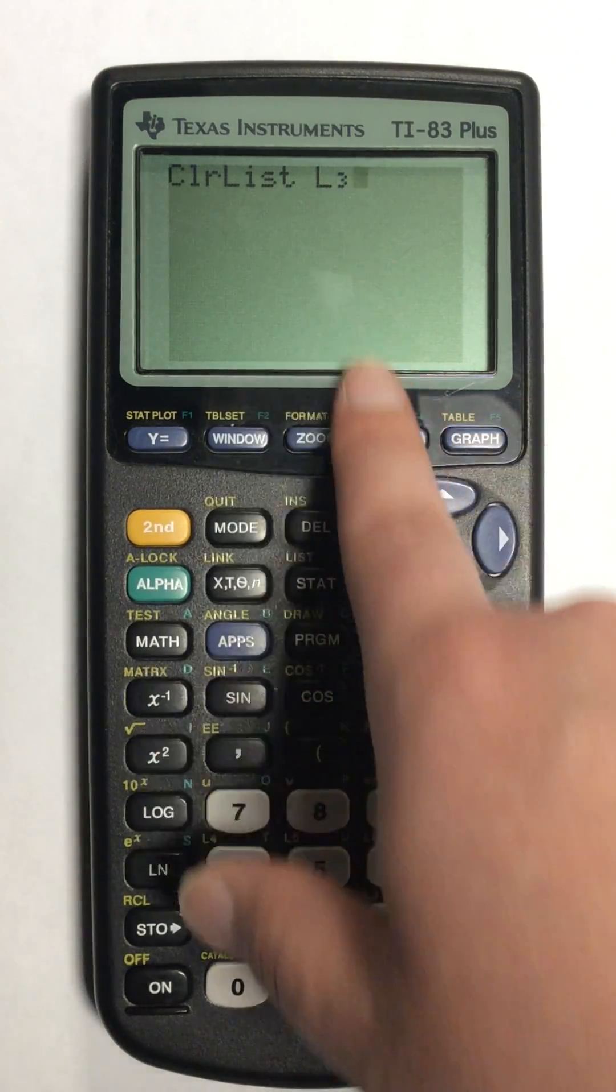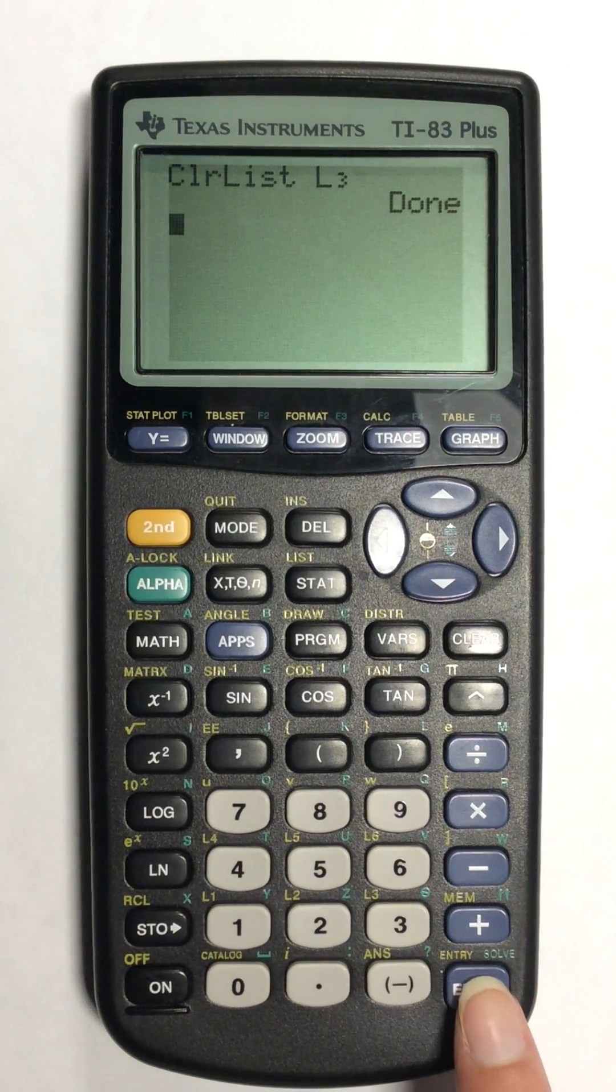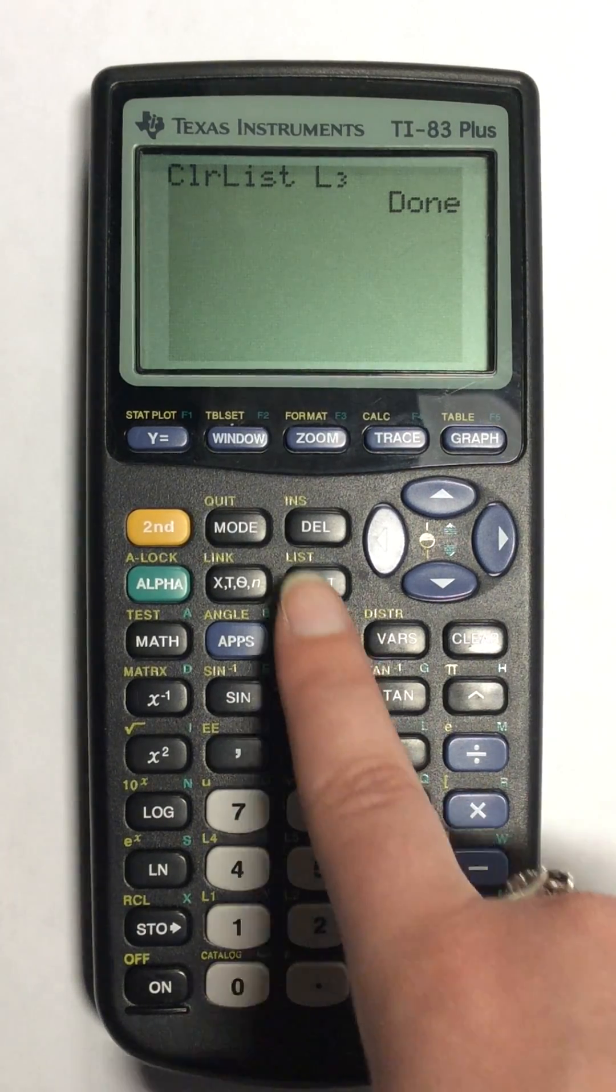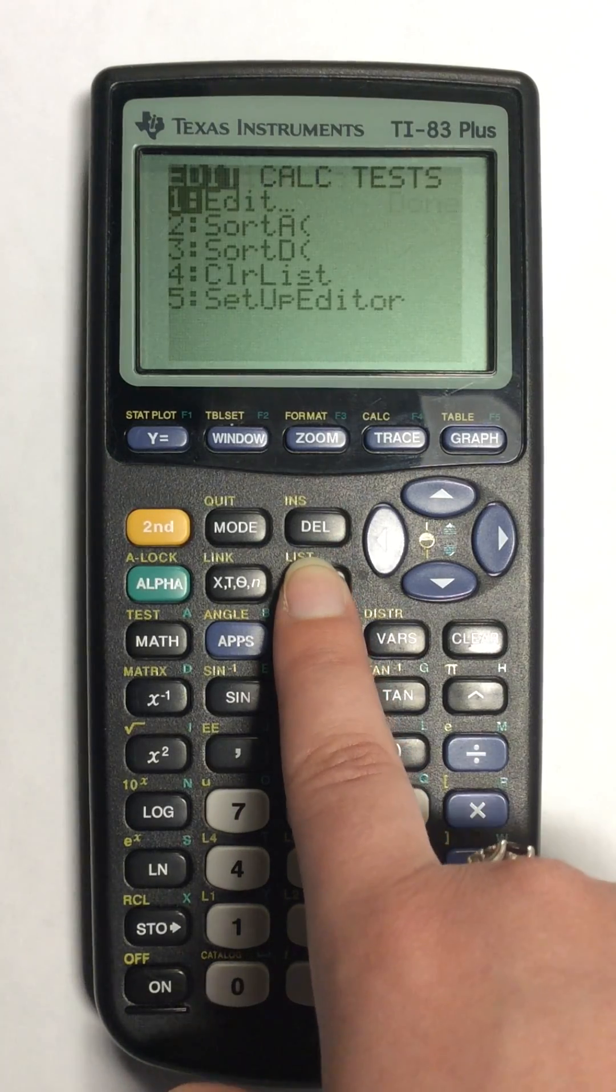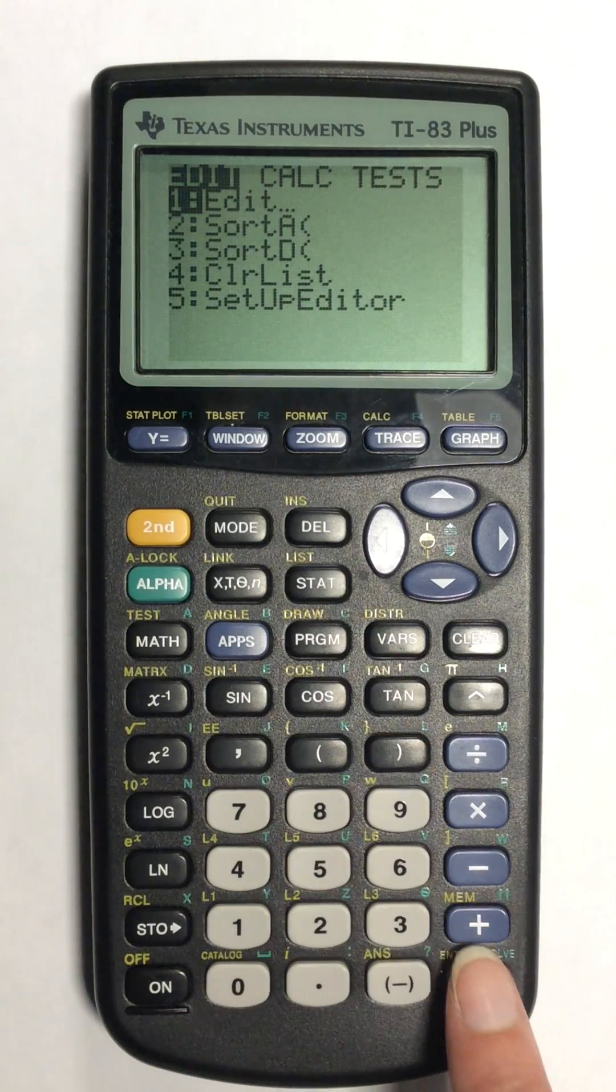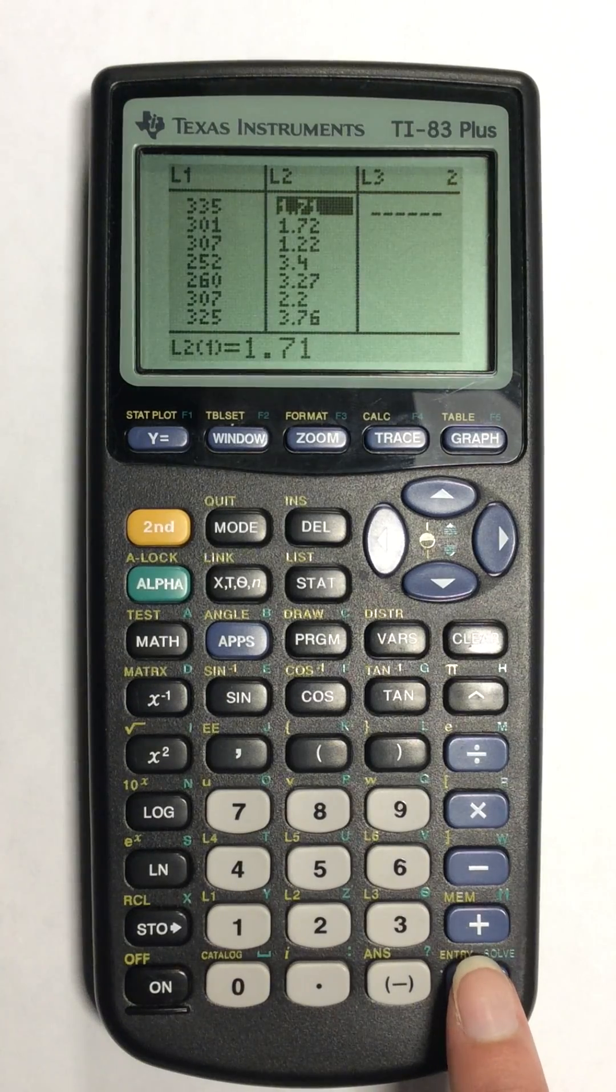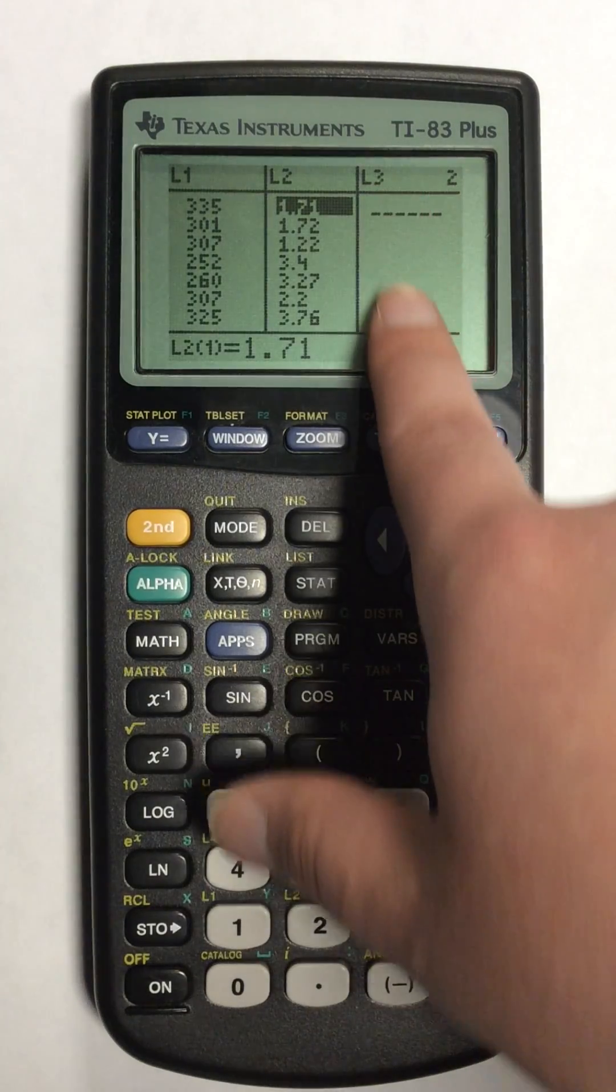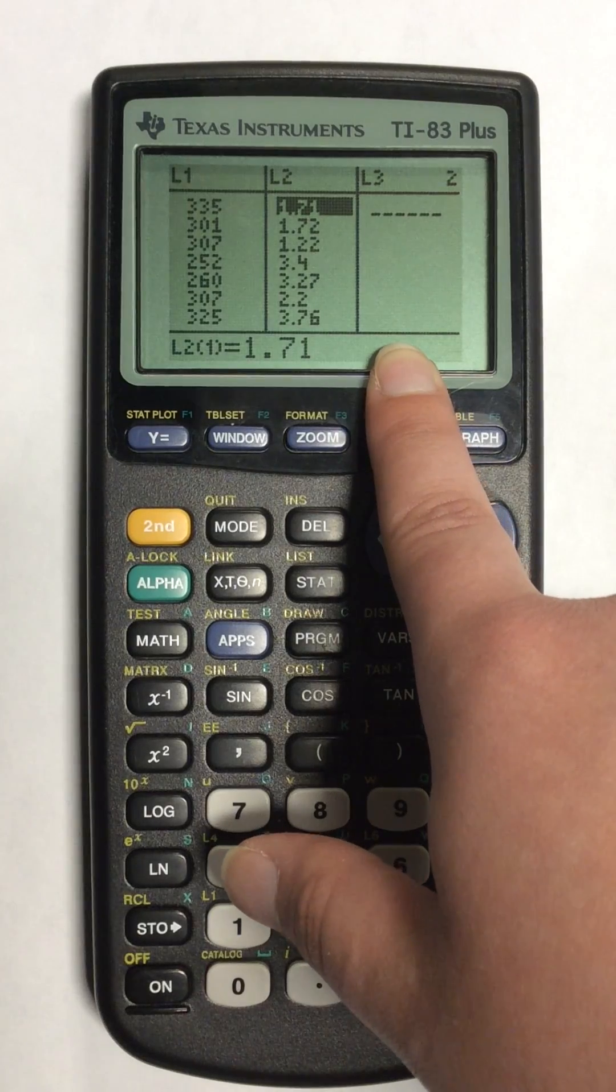This means if I hit enter now, it will say done. And if I go back to stat and I hit edit, list 3 is completely gone. So it has cleared the entire list.